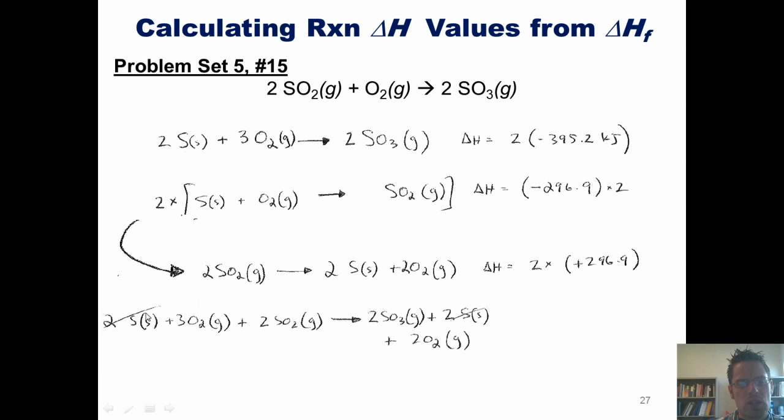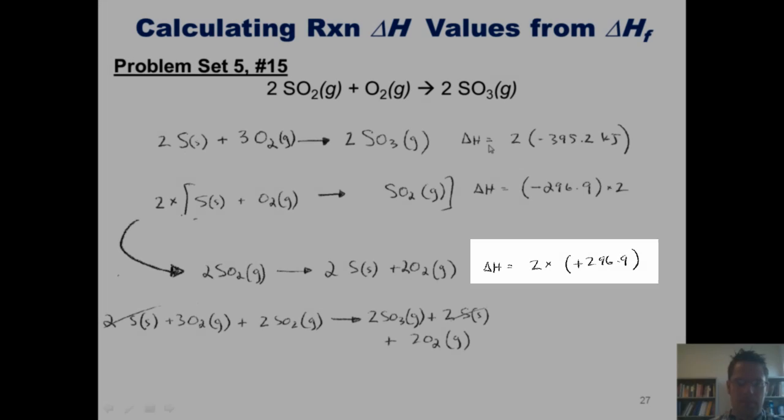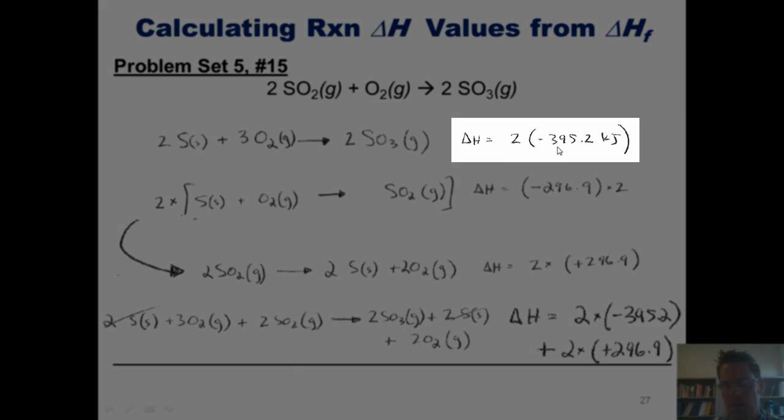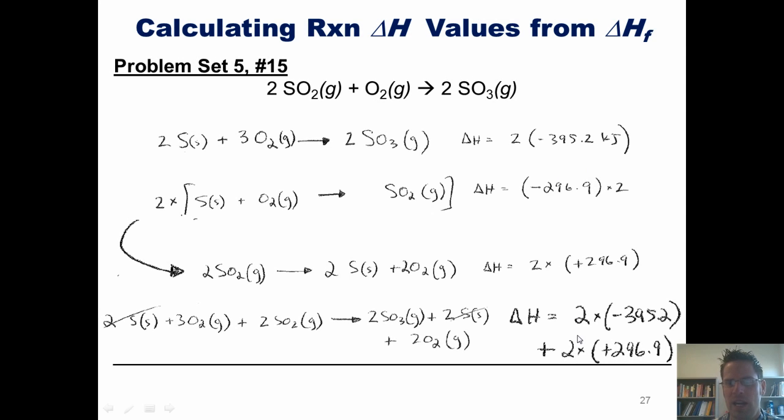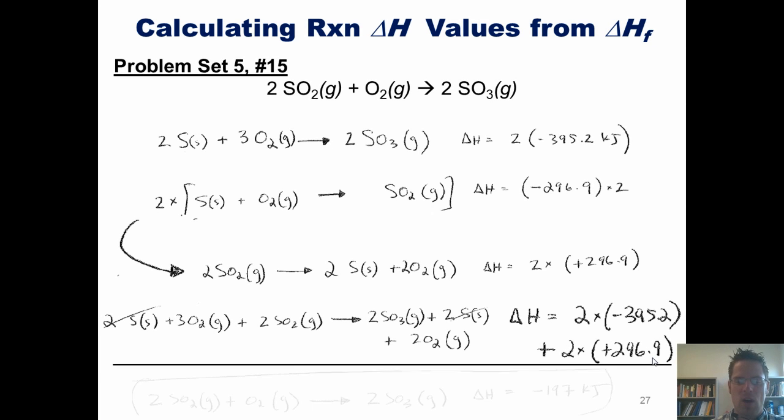The two sulfurs cancel from the left and right sides because they're the same. To obtain an overall delta H, I add the individual delta Hs for these two steps: two times negative 395.2 and two times positive 296.9. When I add all of that up, I get a final equation matching the original target and an overall delta H of negative 197 kilojoules.